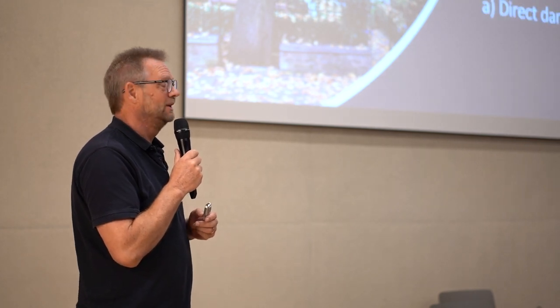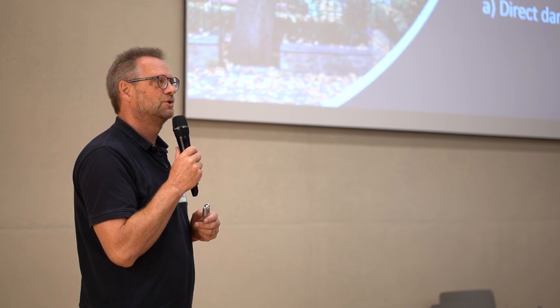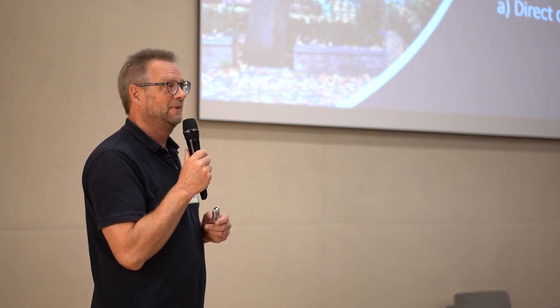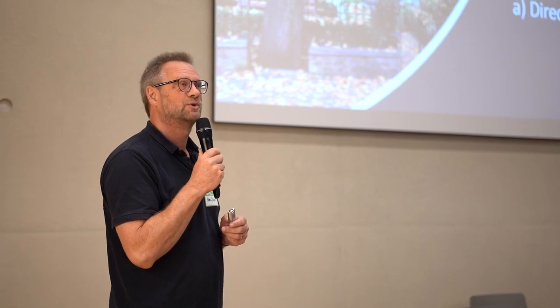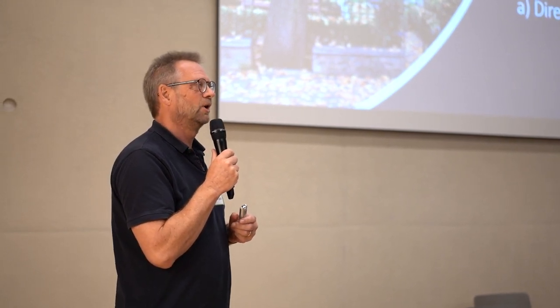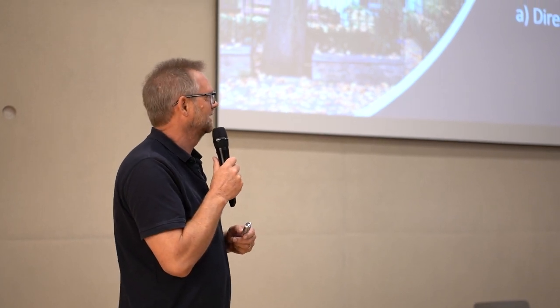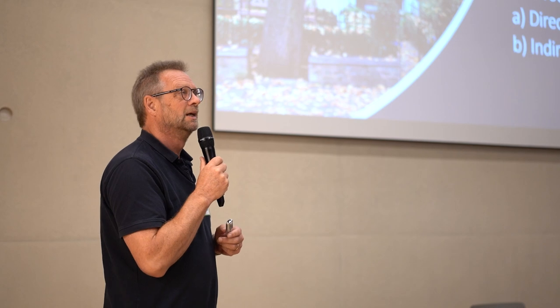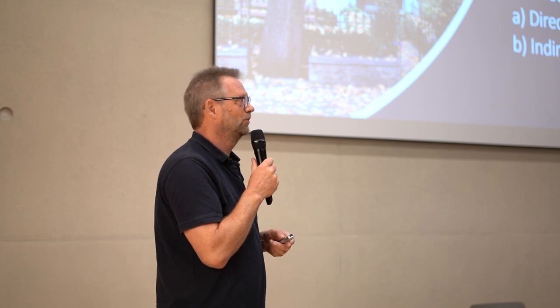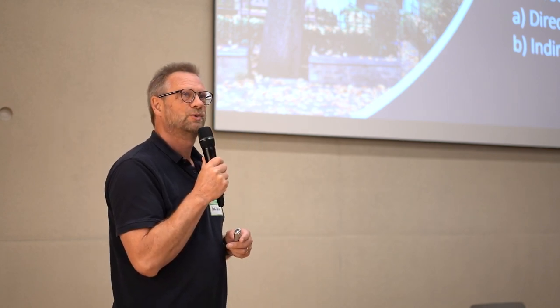I'm going to talk about tree issues — when trees are a bit of a nuisance. Tree roots can cause damage to structures in two ways. One is direct damage: a root comes into contact with a structure, presses against it, and as it grows distorts that structure. Then you have indirect damage — not the root directly, but mediated through the soil, such as subsidence mediated through shrinkable clay soils.